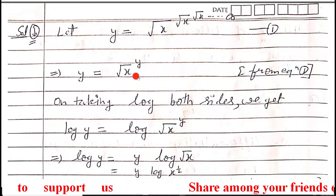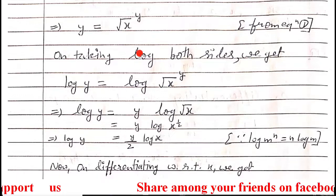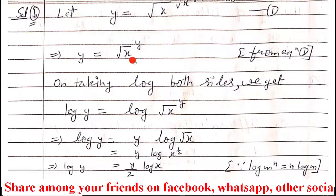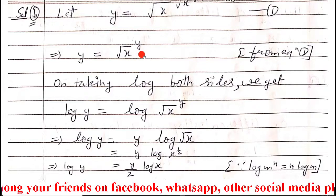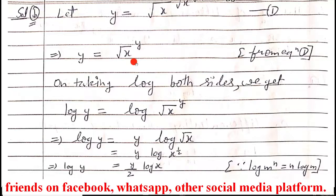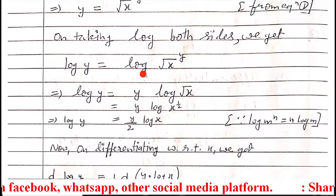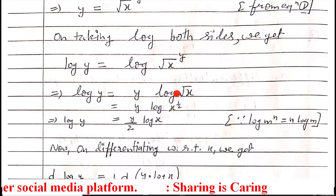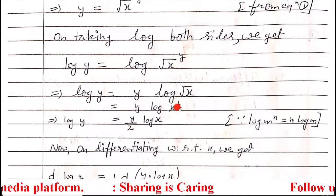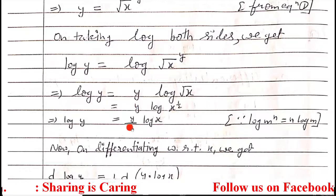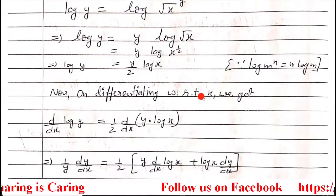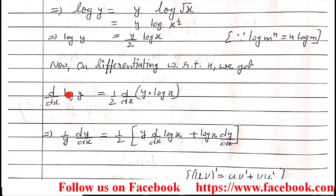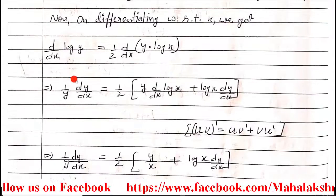It is an implicit function — one in which the variables cannot be separated — so we take the logarithm on both sides. We get log y = y times log(root x). Since root x can be written as x to the power half, the half comes in front: log y = (y/2) log x. Now differentiate with respect to x. The derivative of log y is (1/y)(dy/dx) by chain rule.